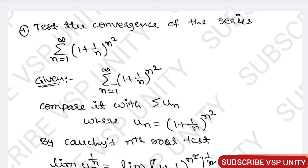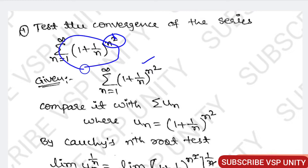If you observe this problem, in the power we have n squared. Since the power is n squared, if one n gets cancelled, you will get clarity on the total part. So here we have to use the nth root test.